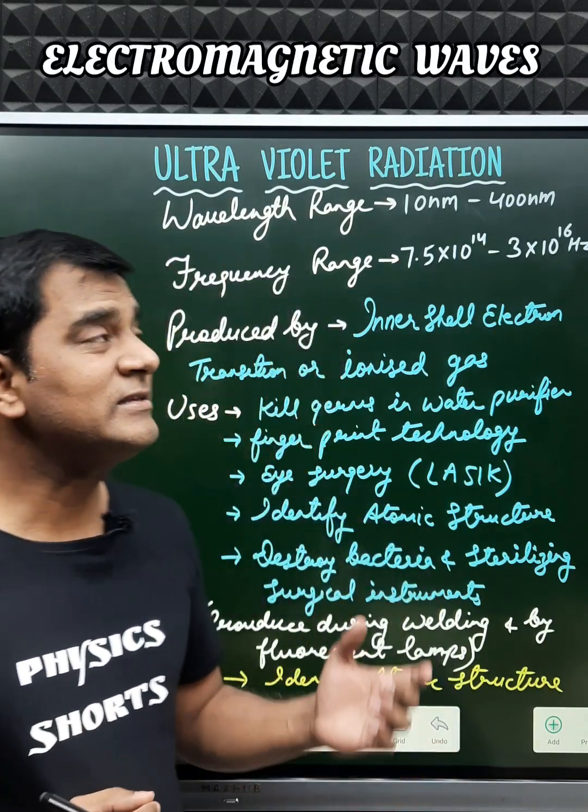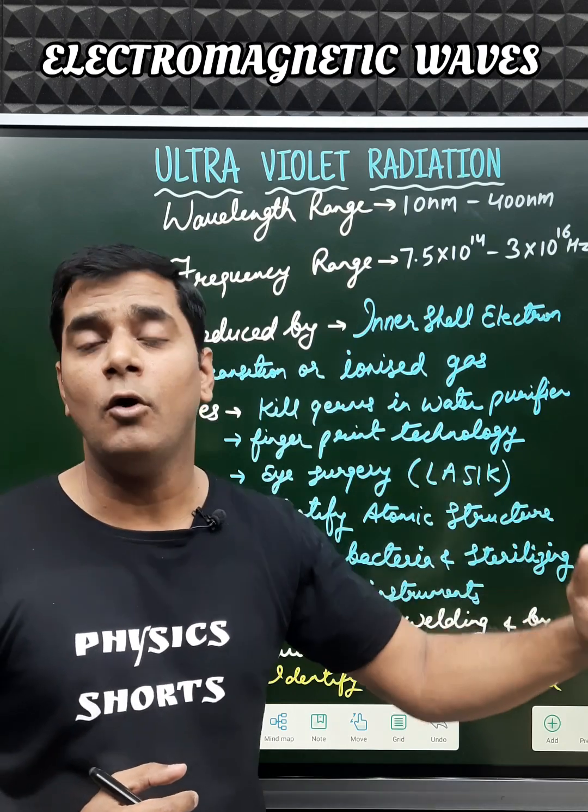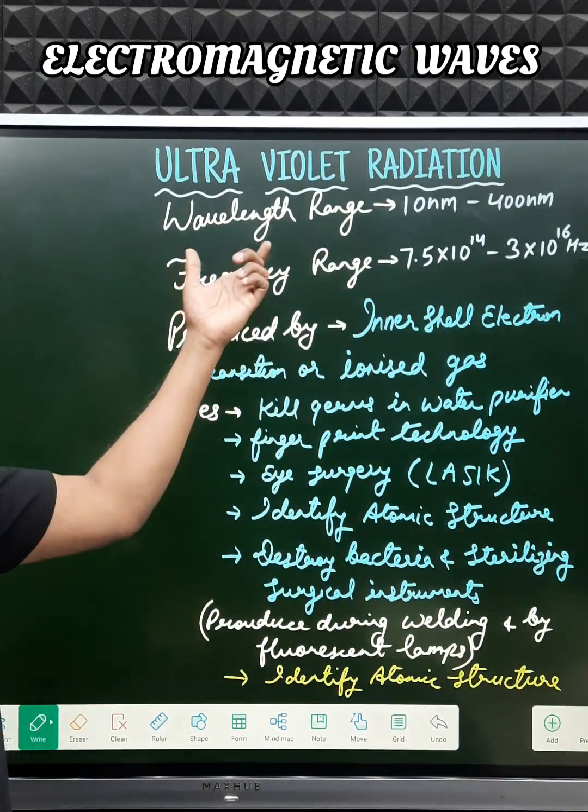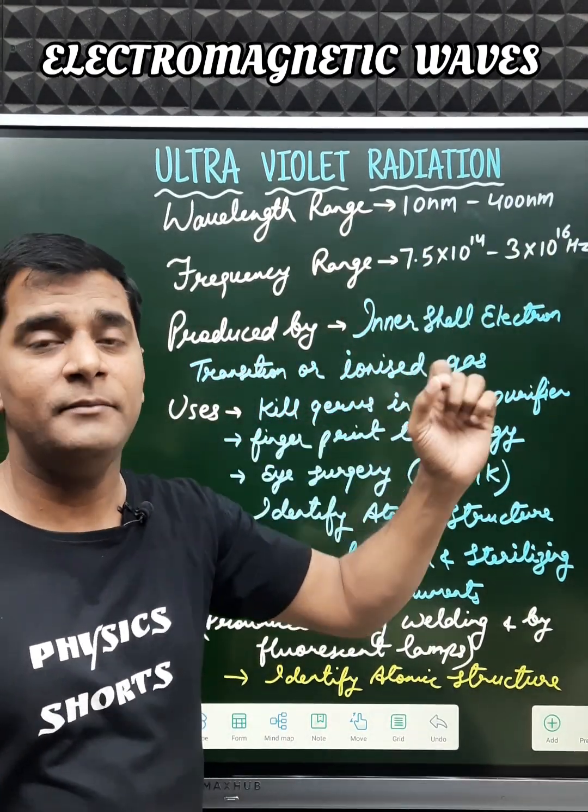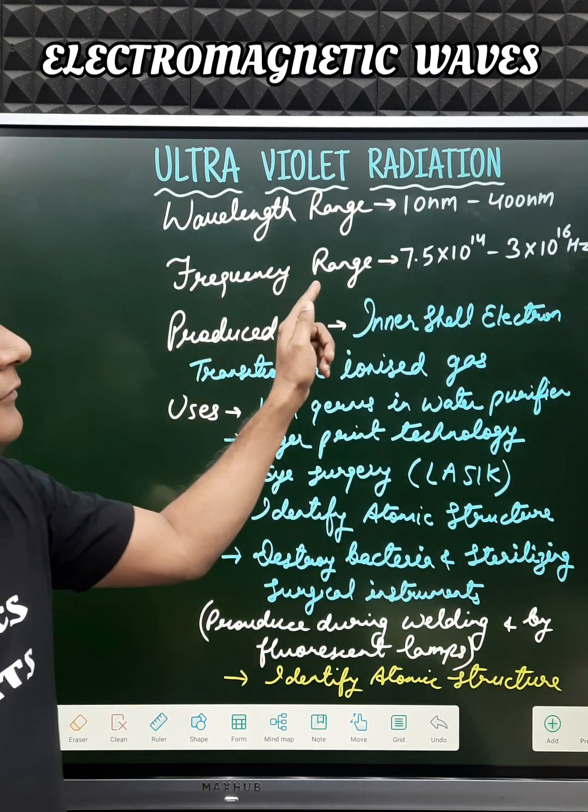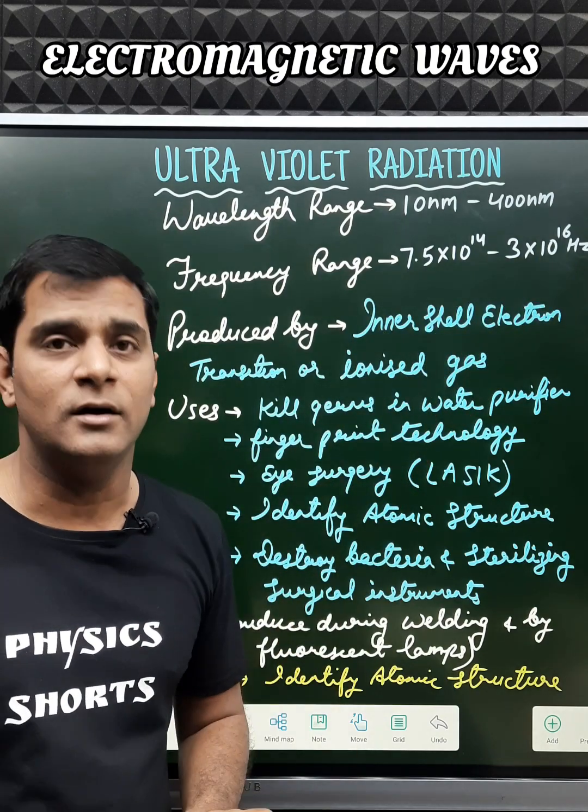The ultraviolet radiations, also called UV rays, are absorbed by the ozone layer of our atmosphere. They have a wavelength range of 10 nanometers to 400 nanometers, where nanometer equals 10 to the power minus 9 meters, and a frequency range of 7.5×10^14 to 3×10^16 hertz.